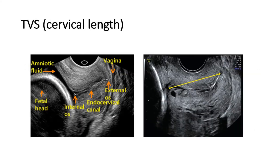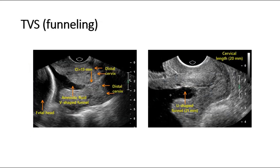These pictures show the cervical length seen on transvaginal ultrasound, with labeling of the amniotic fluid, fetal head, internal OS, external OS, and vagina. Cervical length is measured as the distance between the internal and external OS. Additional pictures show funneling: the first picture shows amniotic fluid causing a V-shape funnel, and the second shows a U-shape funnel.